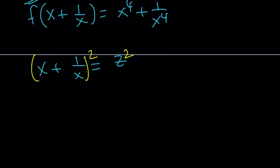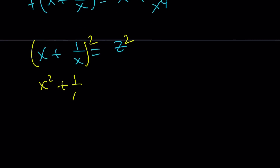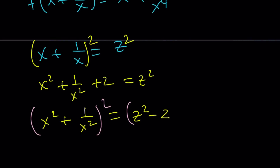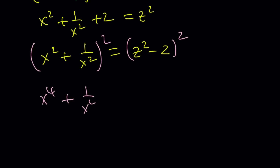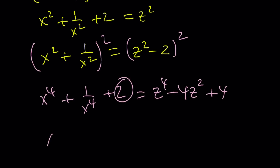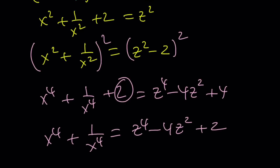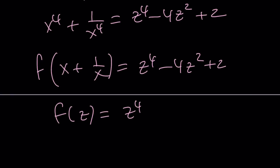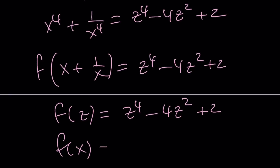I'm just going to square both sides. You get x squared plus 1 over x squared plus 2 equals z squared. Isolate x squared plus 1 over x squared: that's z squared minus 2. Then square both sides again, because there's a good reason — you're going to get what you're looking for. From here we get x to the 4th plus 1 over x to the 4th plus 2 equals z to the 4th minus 4z squared plus 4. Subtract 2 from both sides and you get z to the 4th minus 4z squared plus 2. Since f of x plus 1 over x equals this, replace x plus 1 over x with z to get f of z, then replace z with x. These x's and z's are all dummy variables, so you'll get the answer.